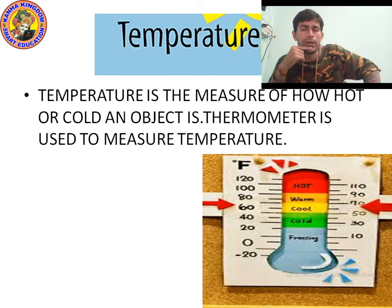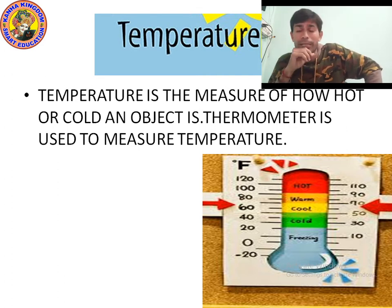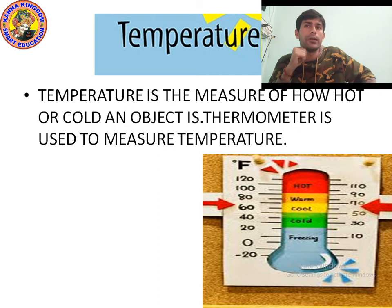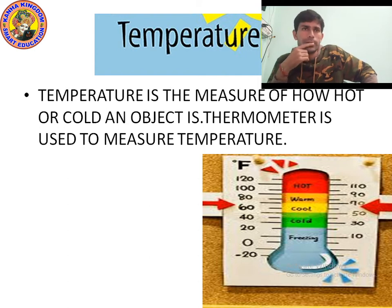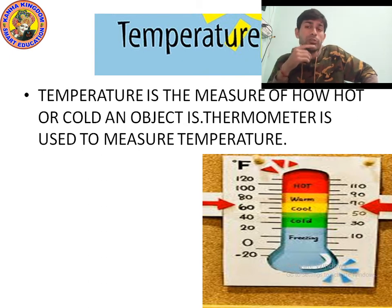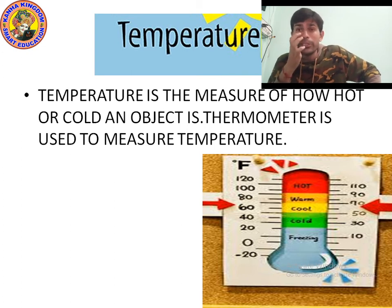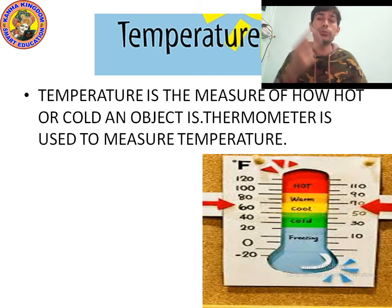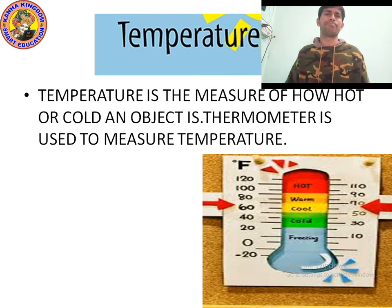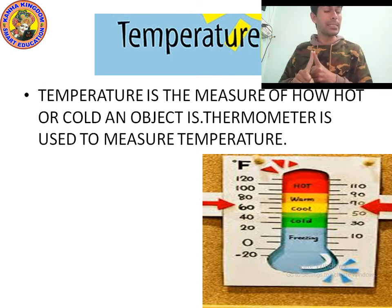0 degrees is the freezing point and 100 degrees Celsius is the boiling point — where water starts boiling. Temperature is the measure of how hot or cold an object is, and a thermometer is used to measure temperature. There are three units of temperature: F (Fahrenheit), C (Celsius), and K (Kelvin).